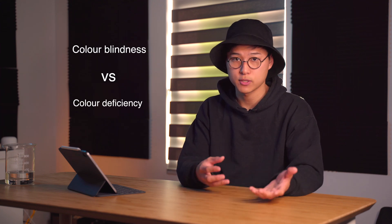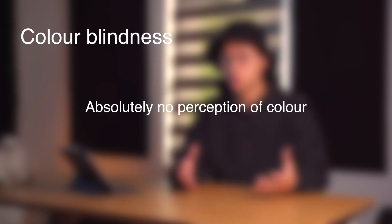And this is where colour deficiencies come in. But before we go any further, I just want to clarify the difference between colour blindness and colour deficiencies. Colour blindness means that you have absolutely no perception of colour, or you are achromatic.